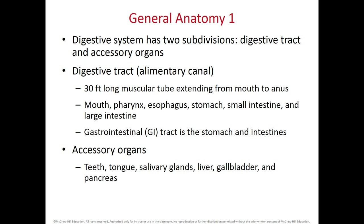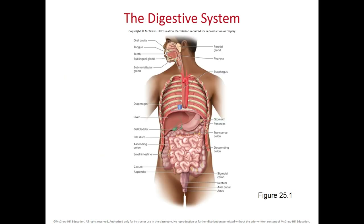When we refer to the gastrointestinal tract, we are talking about the stomach and intestines. In a coronal section of the body, you can see the oral cavity with the tongue, hard palate, soft palate, and salivary glands draining saliva into the oral cavity. The pharynx connects the oral cavity into the muscular tube we call the esophagus, which is located within the thoracic cavity, then pierces the diaphragm and connects to the stomach. Food passes from the oral cavity into the pharynx, then into the esophagus, and then into the stomach.